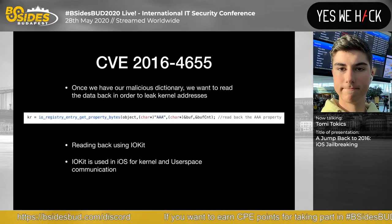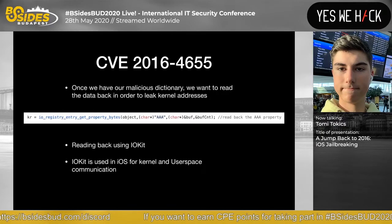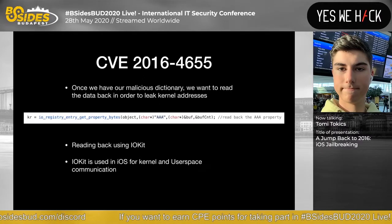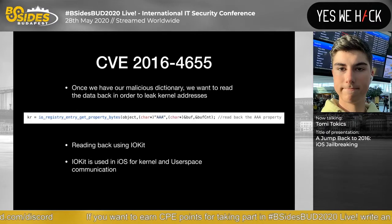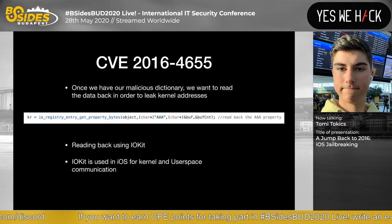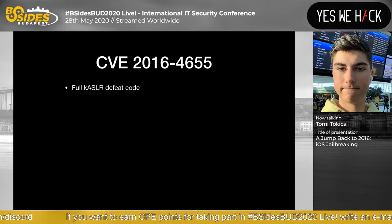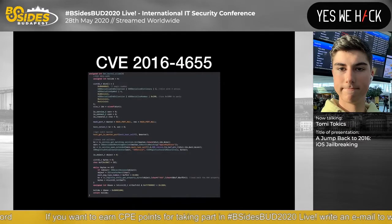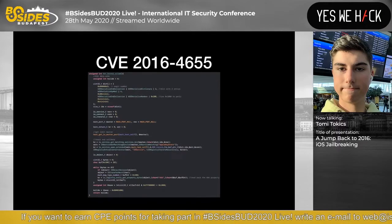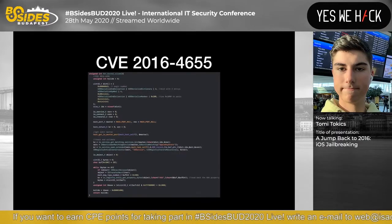We do this using IOKit — which is used for iOS kernel and user-space communication. We read the bytes back by looking up the 'AAA' property and reading from there. The full info leak code is about 50 lines. Running the program gives us debug messages showing the leaked address where the function returned from.